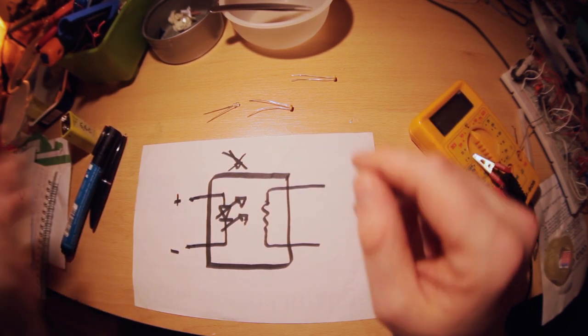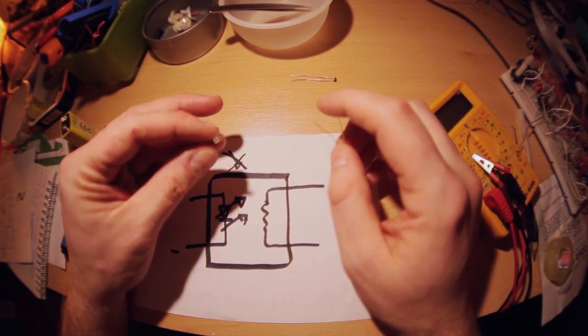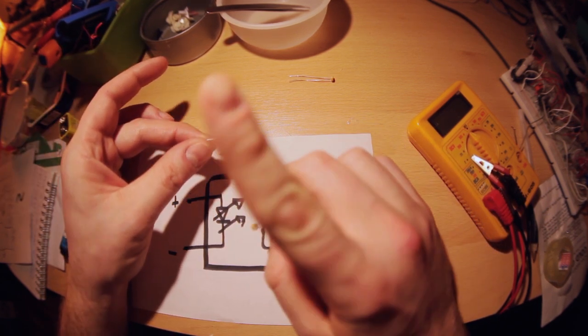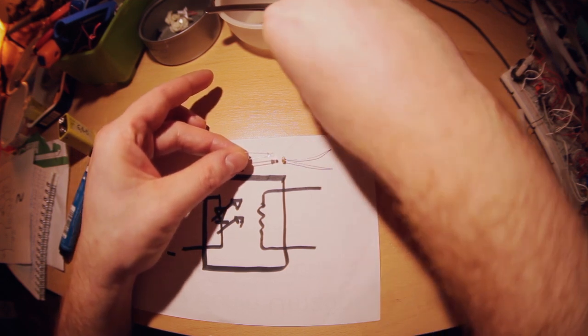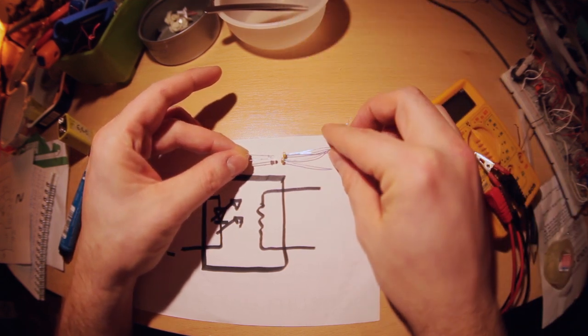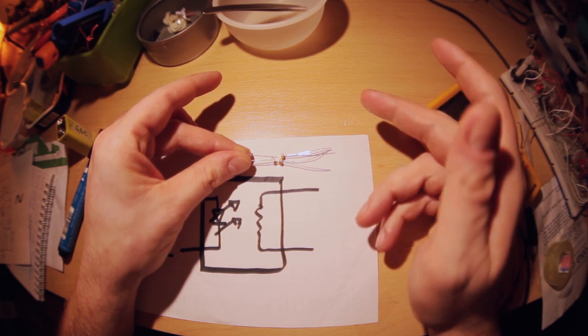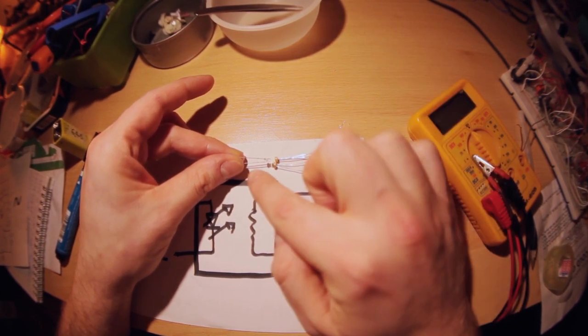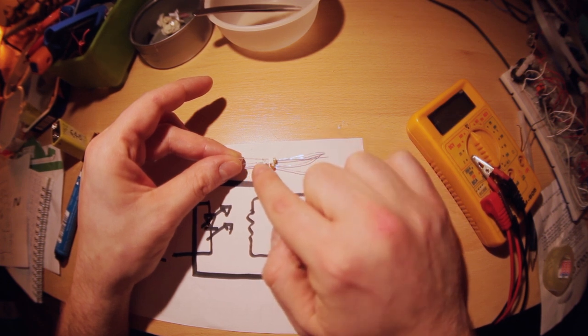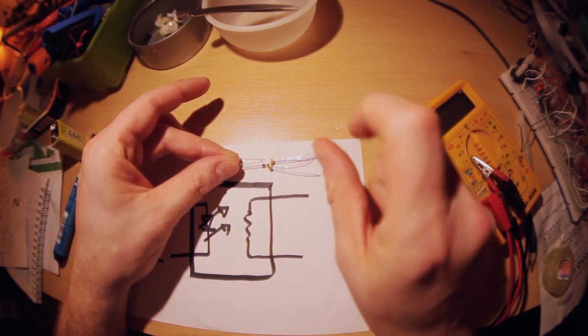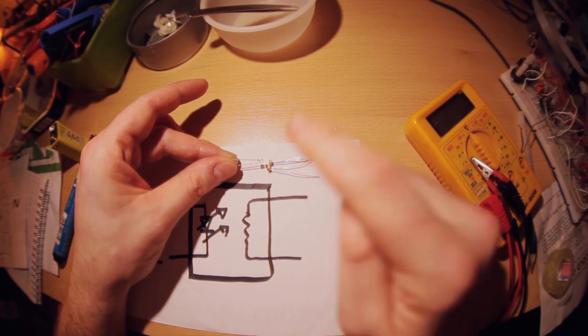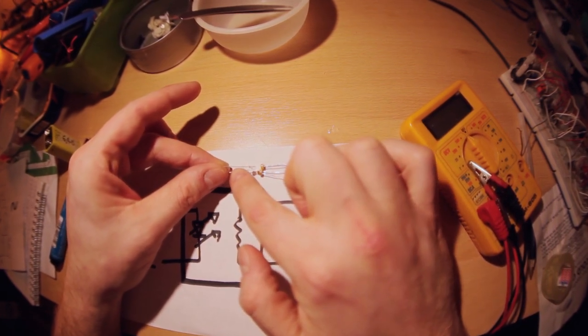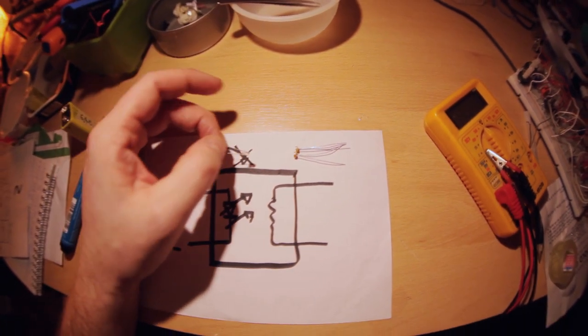But what if, for example, we build a vactrol which has one LED on one side so you can apply only one control voltage, but two light sensitive resistors on the other side. Here you can control with only one voltage two potentiometers. Controlling the voltage that goes to this LED will be like turning two potentiometers at the same time. And not only, you will also be able to apply control voltage to the LED and move it accordingly to it.